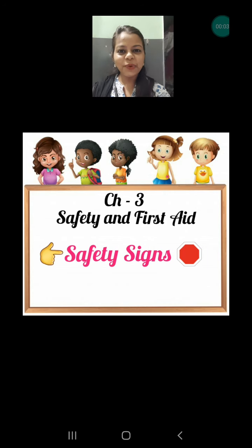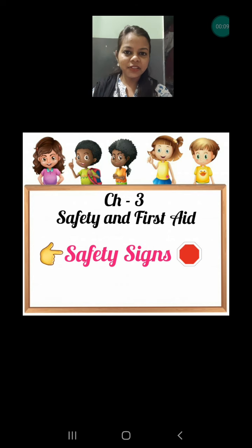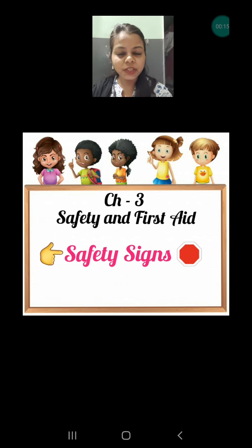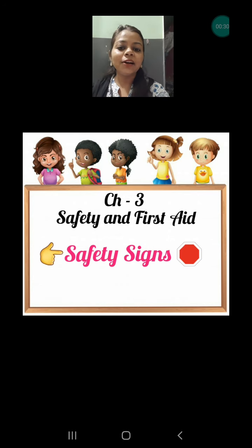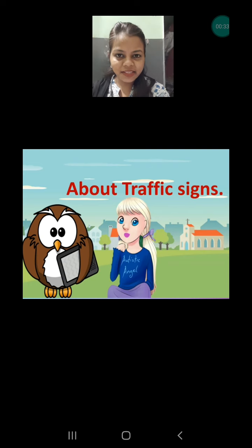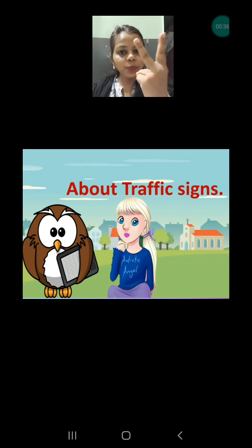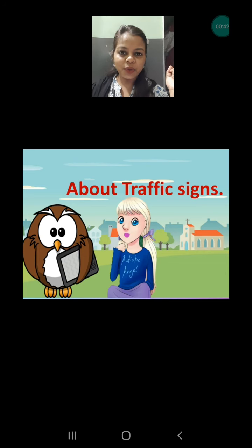Hello my lovely students. I hope you all are very fine. This is the first video of this week and we are going to discuss further about traffic today. In the last video we discussed what we have to do on the road and what we should not do to be safe. In this video we are going to discuss the different types of signs we see when traveling with our vehicles — called safety signs or traffic signs. We are going to know two types: prohibited traffic signs and compulsory traffic signs.